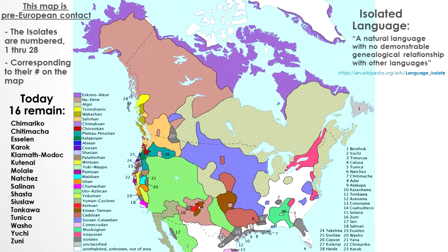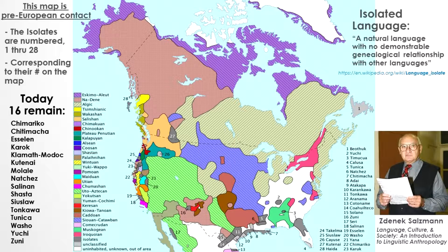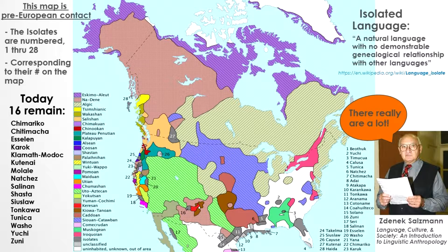Zdenek Salzman, linguistic anthropologist, tells us in his 1993 book, Language, Culture, and Society: An Introduction to Linguistic Anthropology, that there are many languages that do not appear to be related to any other. The single-member language families are referred to as language isolates.